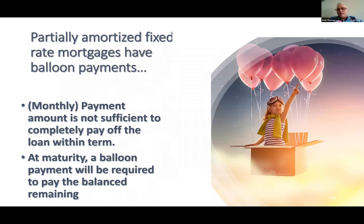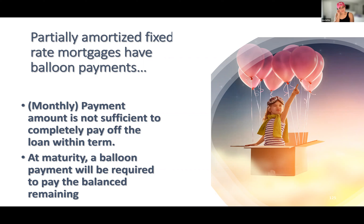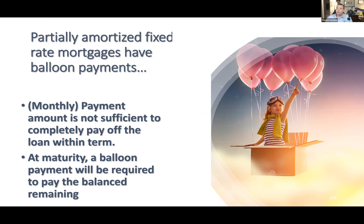The collateral document — the deed of trust — won't say anything about money. The balloon payment will show up in the note, which is the repayment document. The note will state the date of your last payment, the balance as of that date, and that you will be expected to pay it in one lump sum. That's how you know you're looking at a partially amortized loan with a balloon payment.